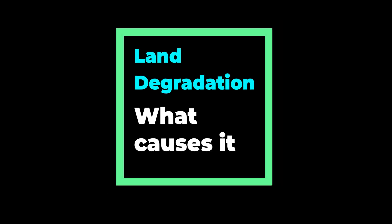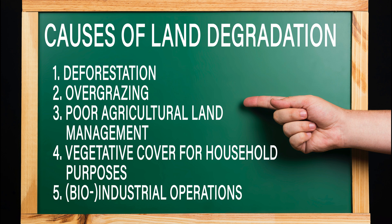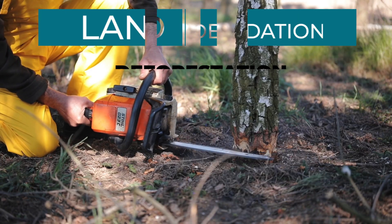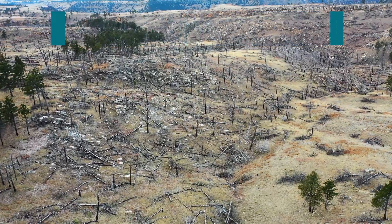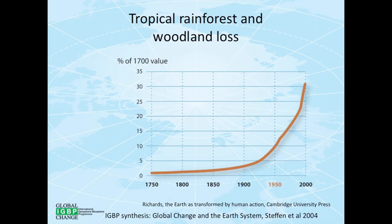Land degradation can happen for a number of reasons. Deforestation and the removal of natural vegetation for fuel wood, agriculture, and industry are rising at an alarming rate, resulting in significant land degradation on 579 million hectares, with Asia accounting for 50% and South America accounting for 17% of the total.